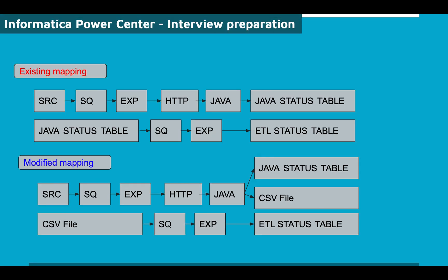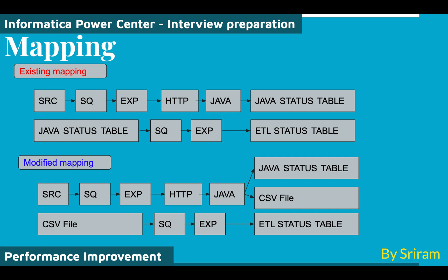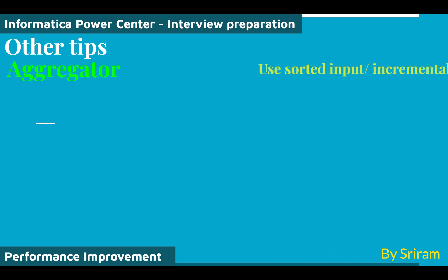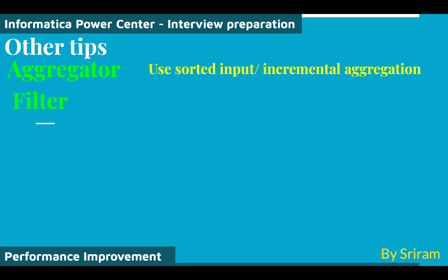Some additional performance improvement tips: For the Aggregator transformation, use sorted input and incremental aggregation to improve performance. For Filter, apply the filter close to the source qualifier so that the number of records is reduced early, making downstream processing much faster.